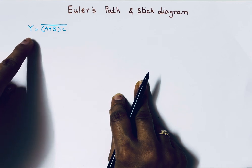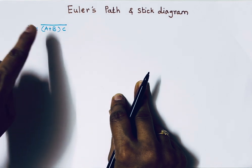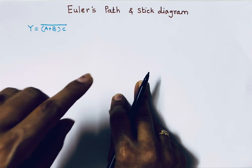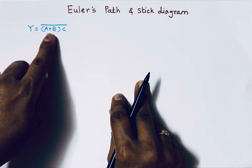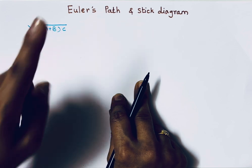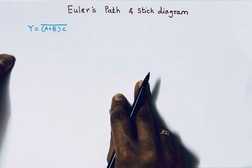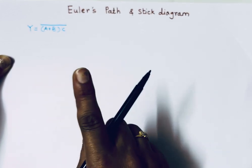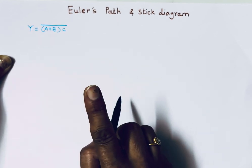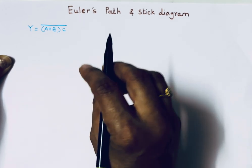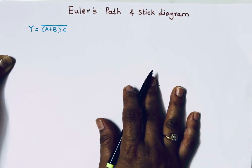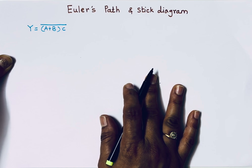We can implement any combinational circuit using either sum-of-product form or product-of-sum form. In both cases we need addition and multiplication operations. The first rule is: to implement multiplication, N-channel MOSFETs are connected in series, and to implement addition, N-channel MOSFETs are connected in parallel. When NMOS are in series, PMOS are in parallel, and when NMOS are in parallel, PMOS are in series.